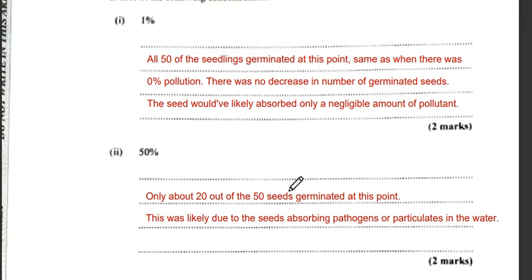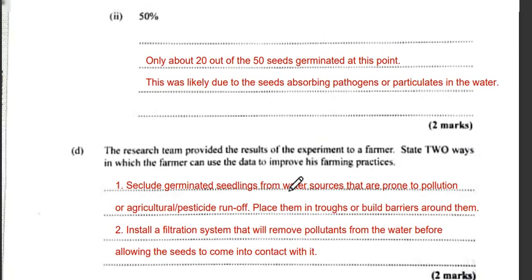At one percent concentration, it had around 50 seedlings germinating — the same as zero percent pollution — so there was no decrease in the number of germinating seeds. The seeds absorbed a negligible amount of pollutant, meaning they absorbed water normally during the germination process.